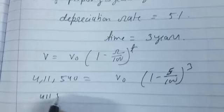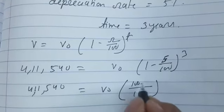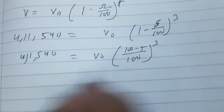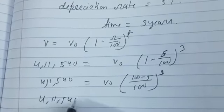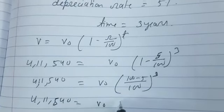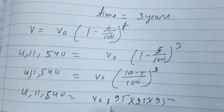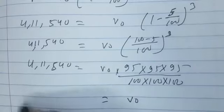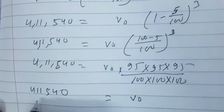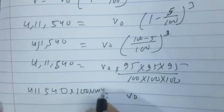So here is 4,11,540 equals V₀, and the same will be 100, here is 100 minus 5 whole cube. One more step: 4,11,540 equals V₀ times 95 into 95 into 95 upon 100 into 100 into 100.